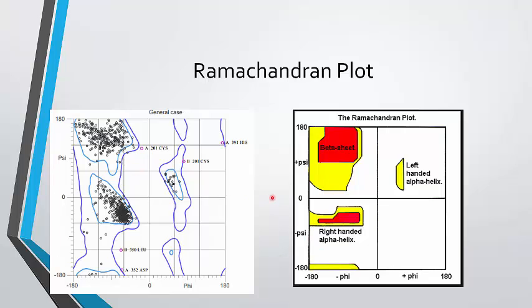Here's a Ramachandran plot that is mostly right-handed alpha helices and beta sheets, as you can see from the phi-psi angles of the protein. There are a few left-handed alpha helices, but these alpha helices and beta sheets are actually very important in the mechanism of the cell, which we'll talk about.